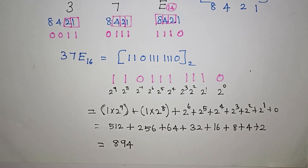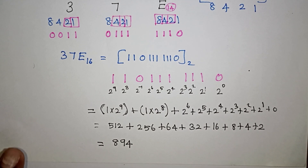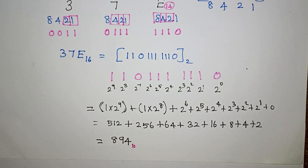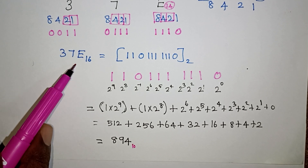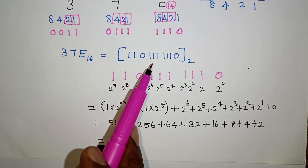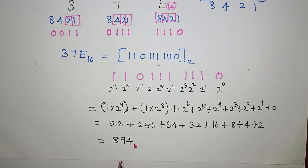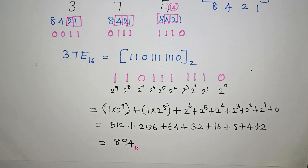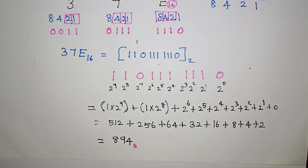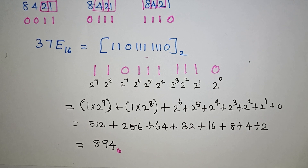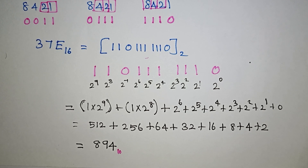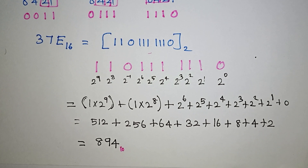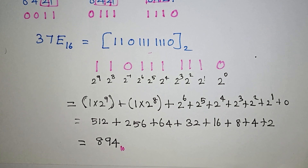So if we have base 2, that is decimal. This is the hexadecimal. This is the binary. This is the decimal form — these are the conversions we can do. If you found this video helpful, please like, share, and subscribe for more videos. See you next time.